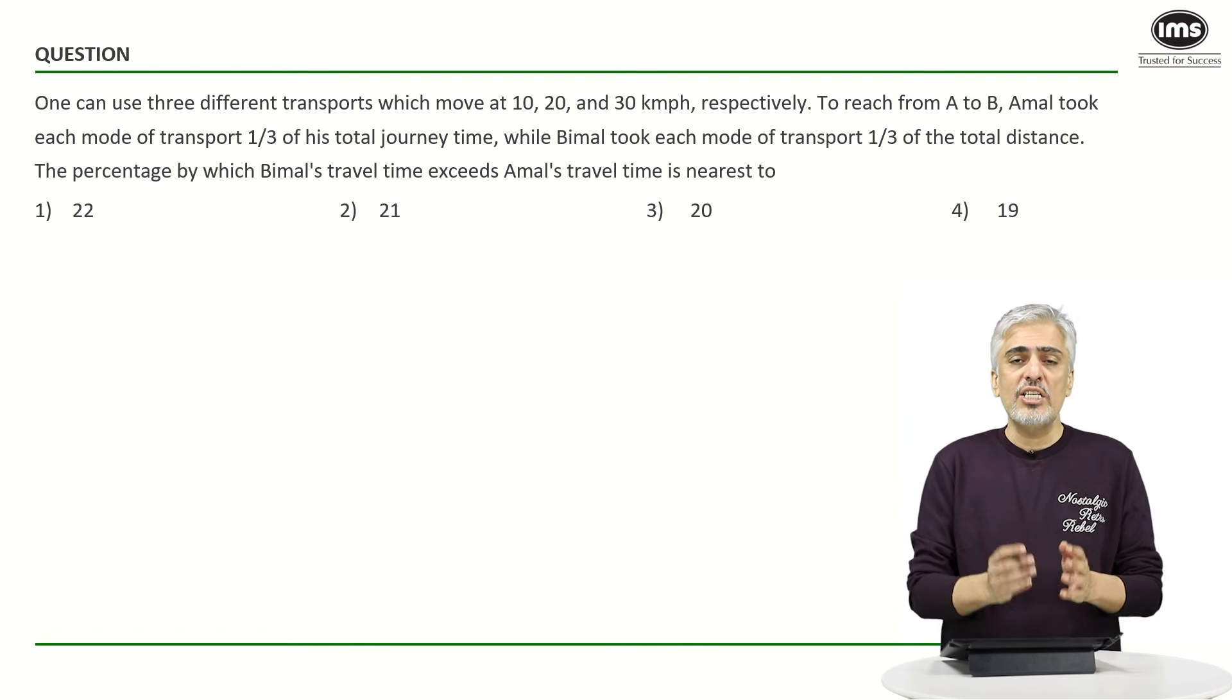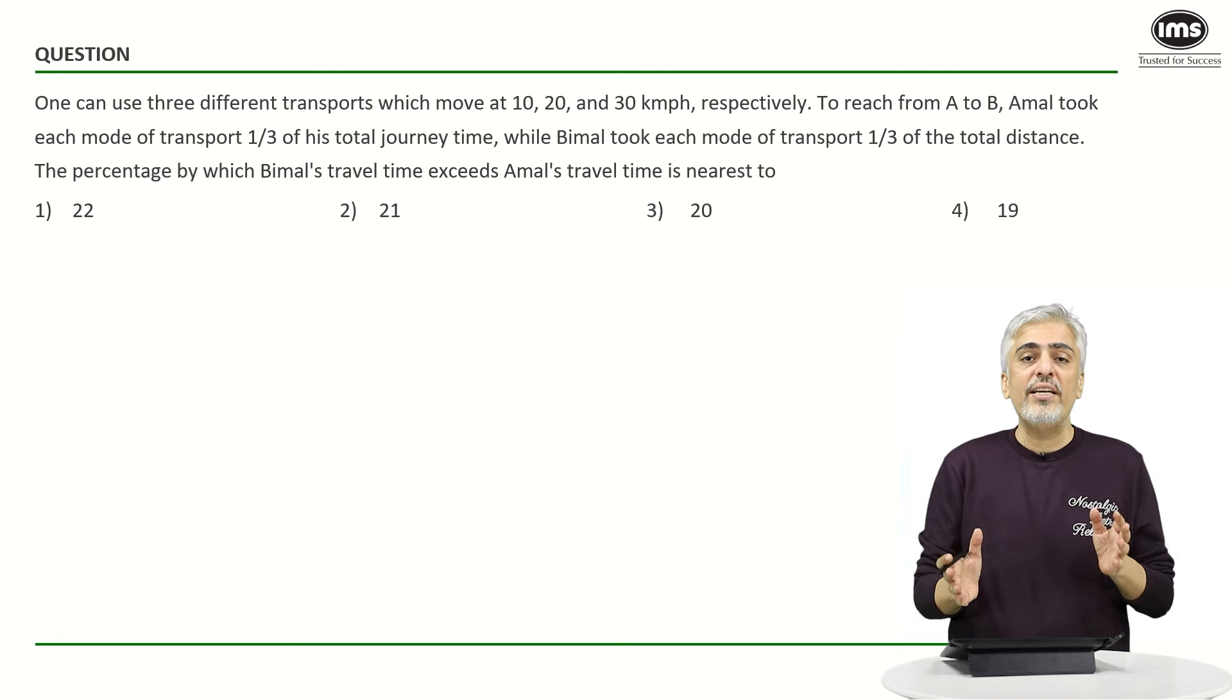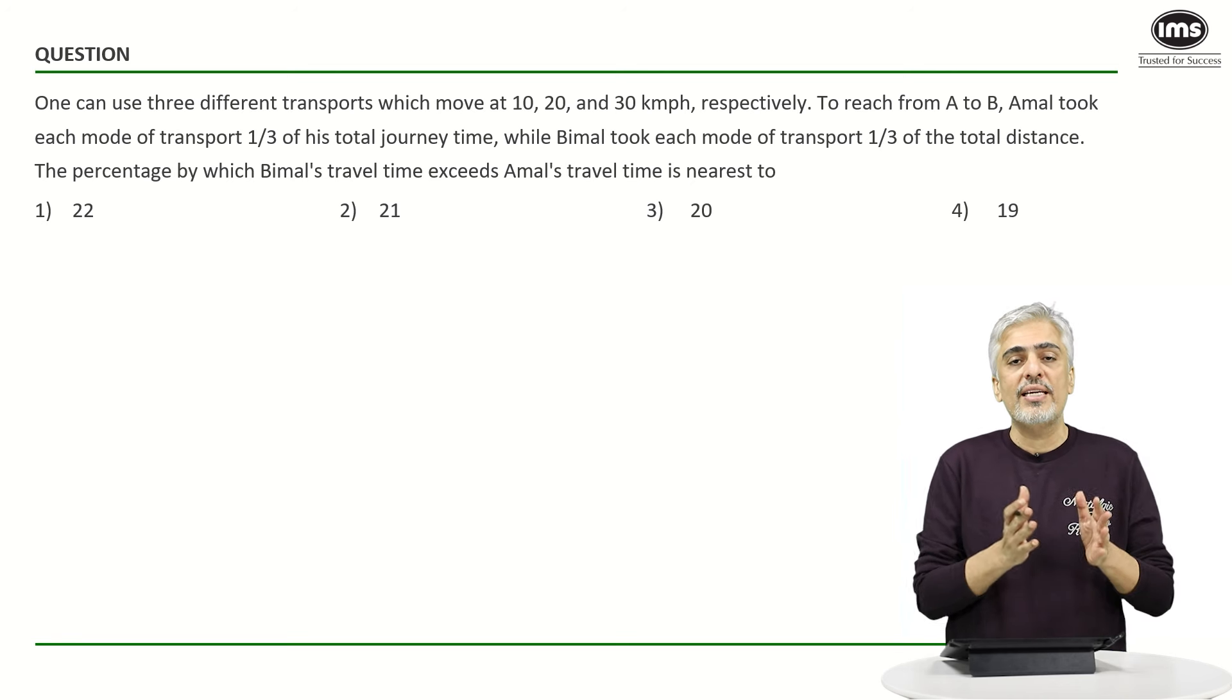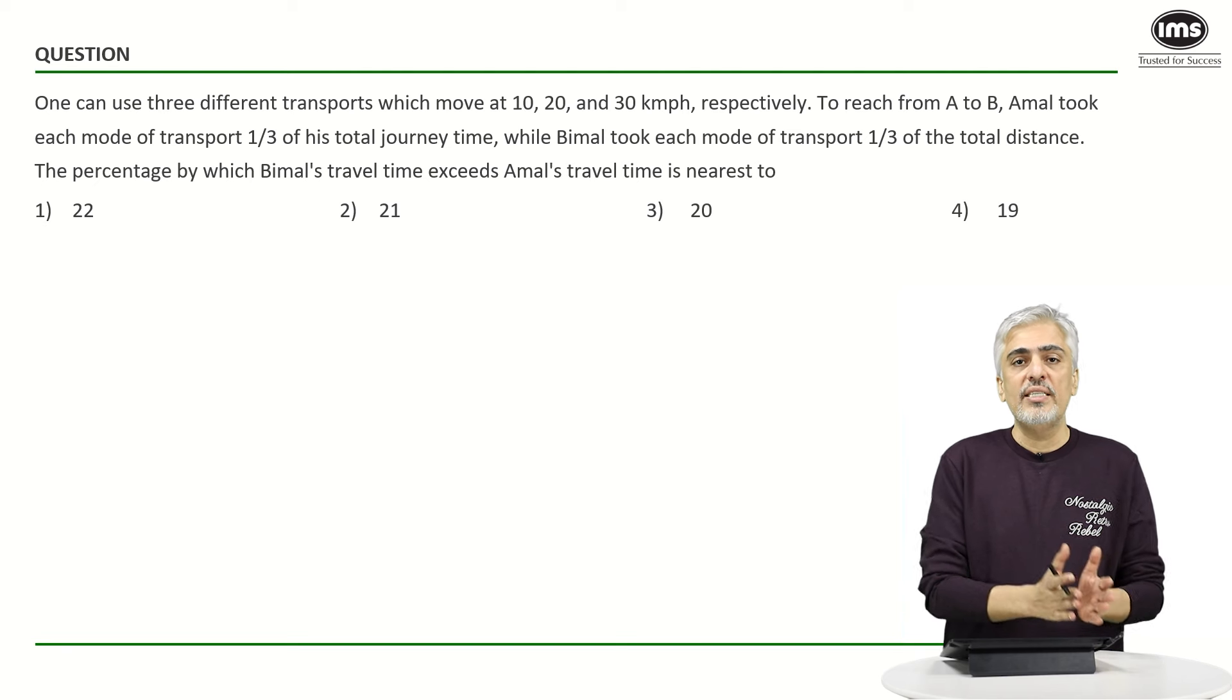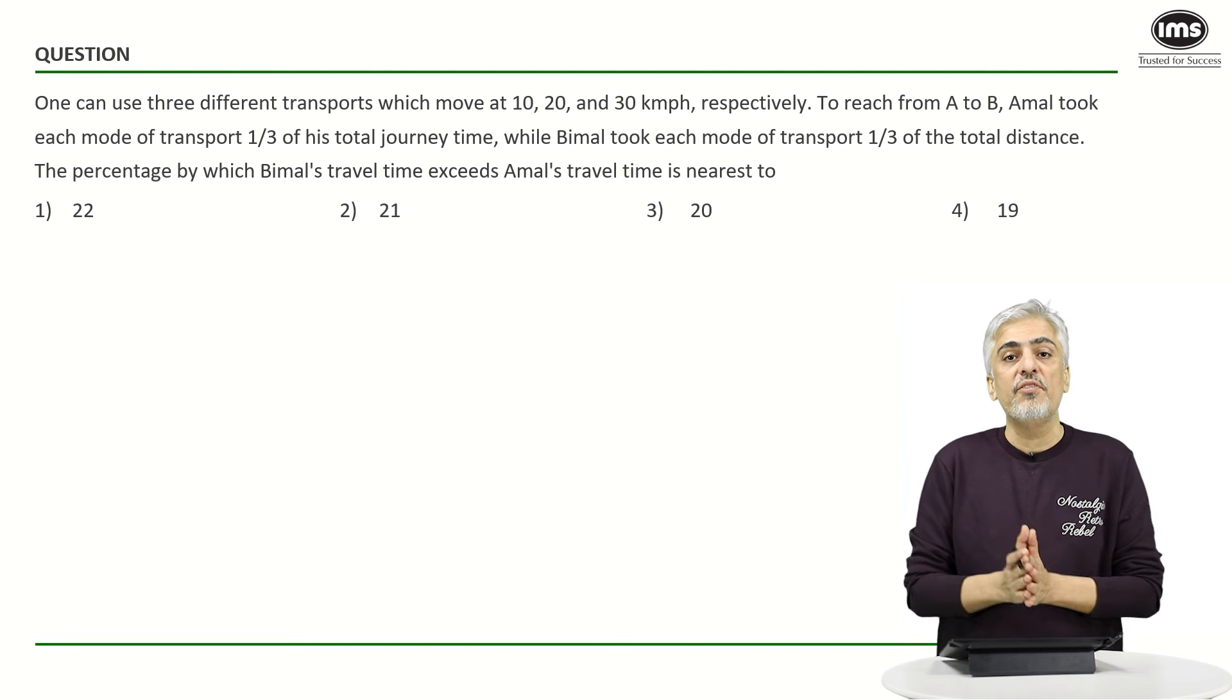Let's have a look at the question. The question speaks about three different modes of transport where you can travel at a speed of 10, 20 and 30 kilometers per hour. There were two persons Amal and Bimal who used the transport in different ways.